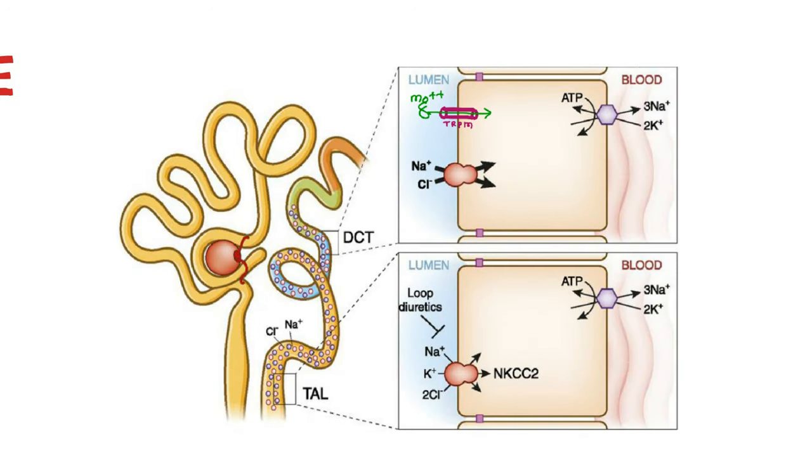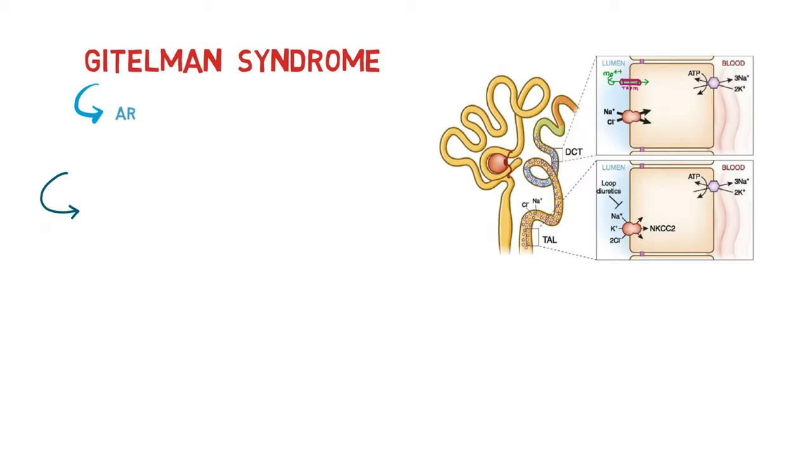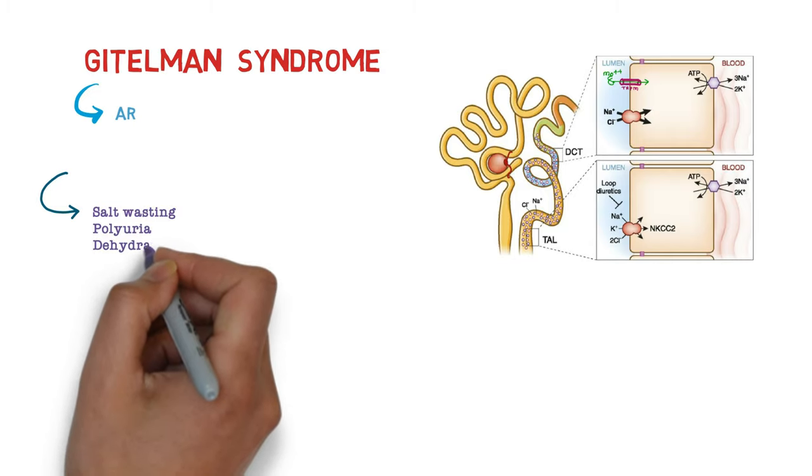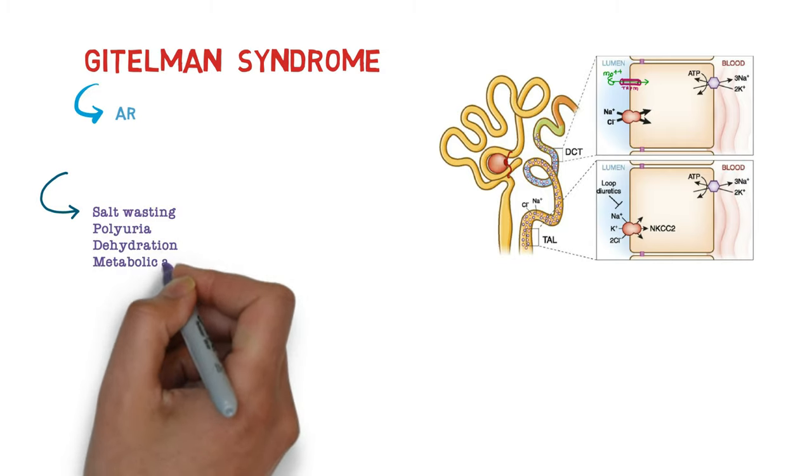Normally, distal collecting tubule has sodium chloride co-transporter and TRPM6 transporter for magnesium reabsorption, but in Gitelman there is a loss of function of these channels and hence it leads to salt wasting, polyuria, dehydration, metabolic alkalosis as in Bartter syndrome.